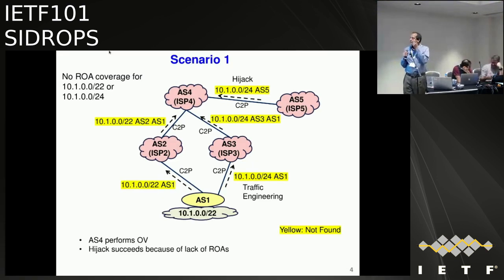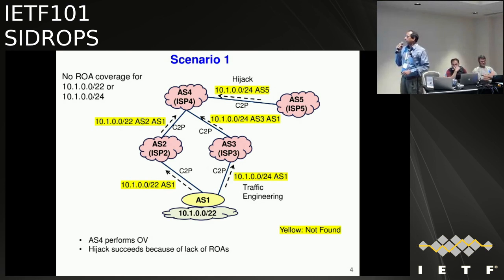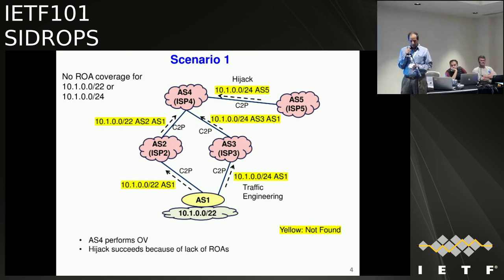In the first scenario, there are no ROAs. AS1 is originating a /22, and also originates a /24 to a different transit provider. There's a hijack at the top coming from AS5 — traffic engineering of the more specific and also a hijack of the more specific. The less specific is also making its way to AS4. Sitting at AS4, these are all 'not-found' and we're not really differentiating between them.